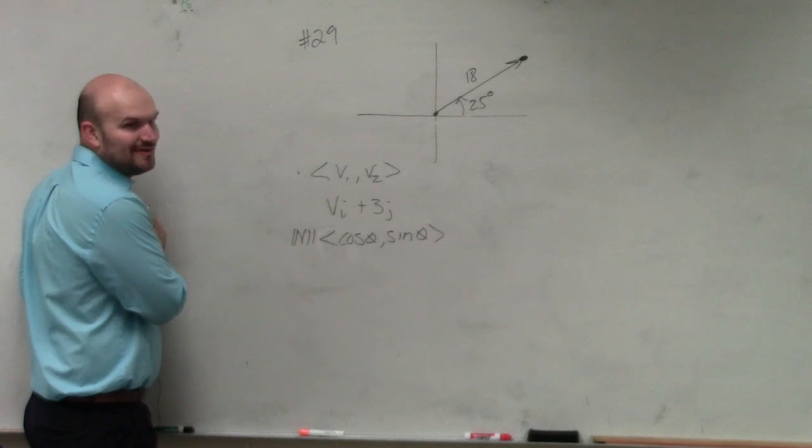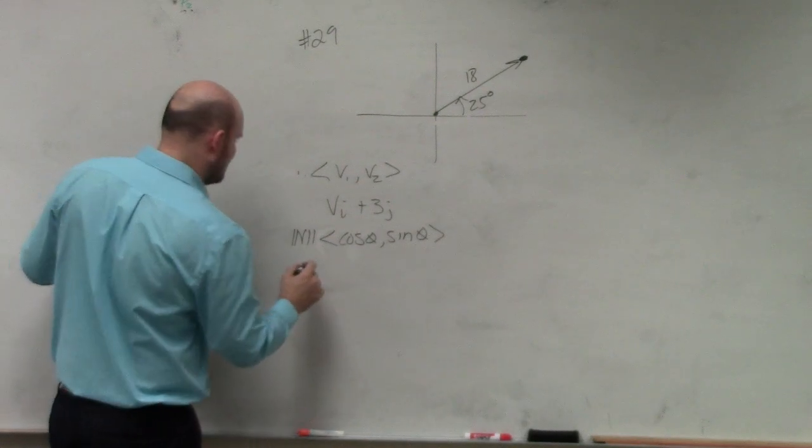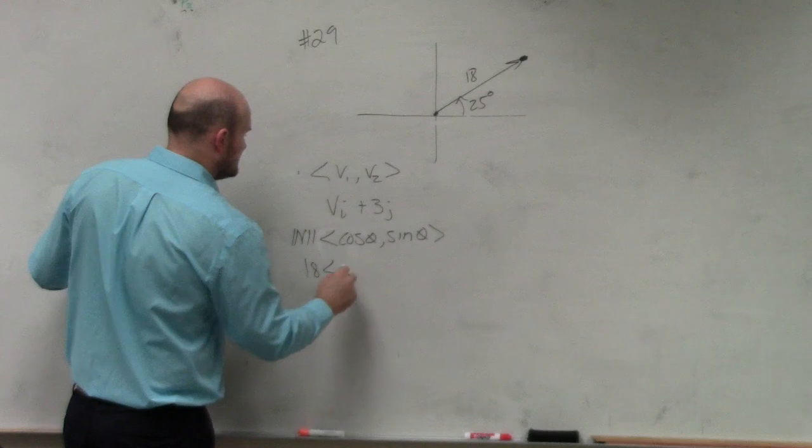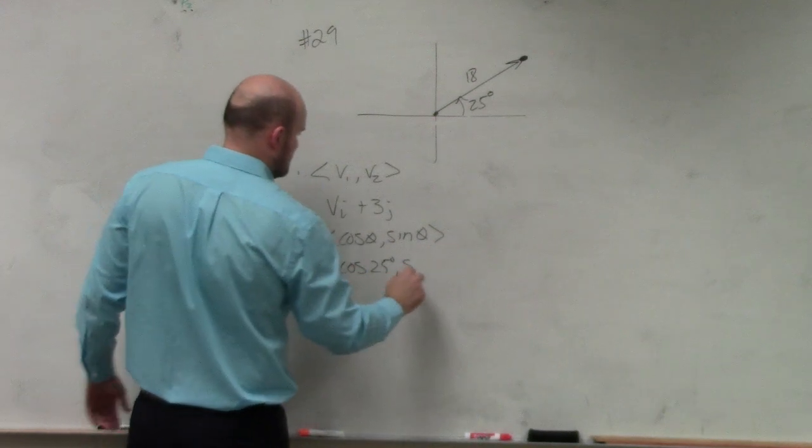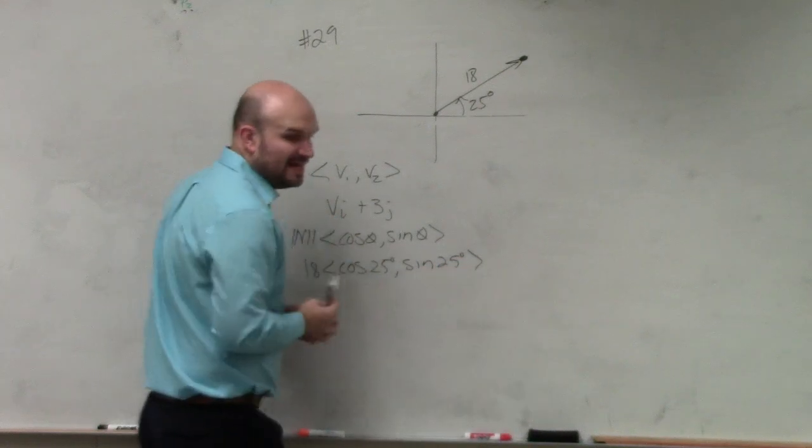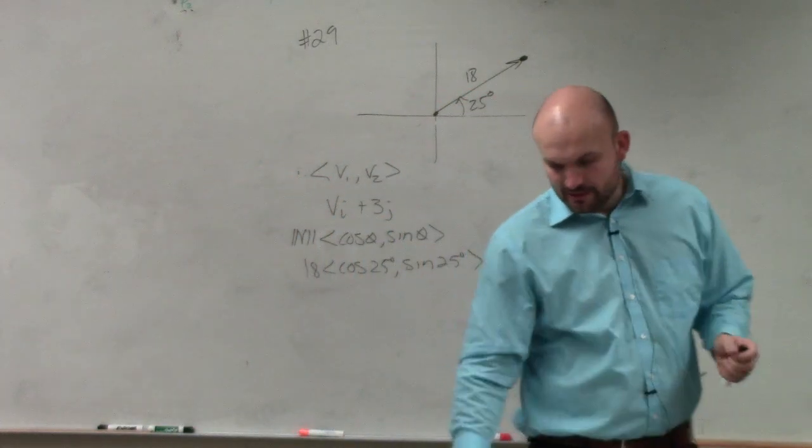Theta is our angle. Do we know the angle of our vector? Yeah. So all you guys have to do for this is 18 times cosine of 25 degrees, comma, sine of 25 degrees. Then it said to simplify your answer.